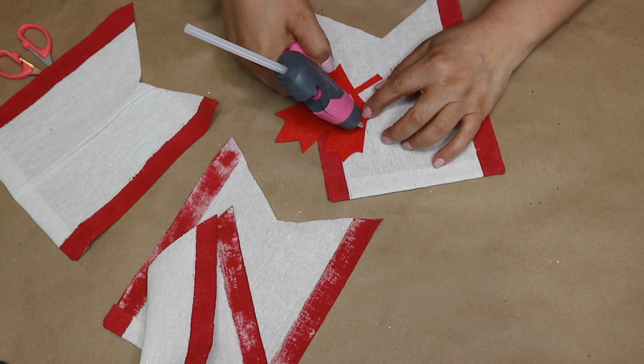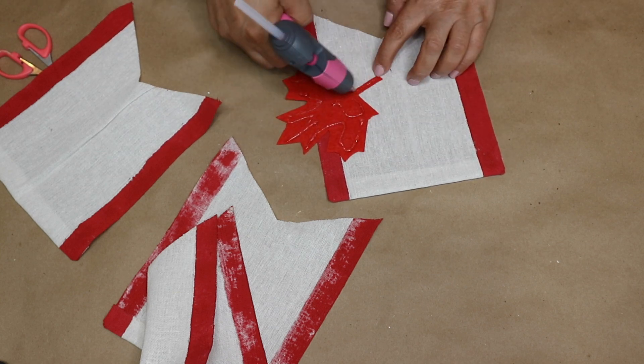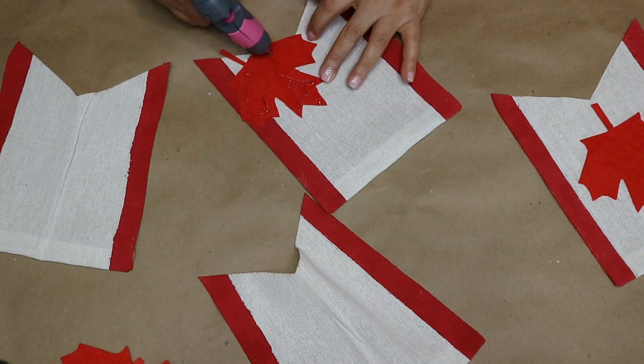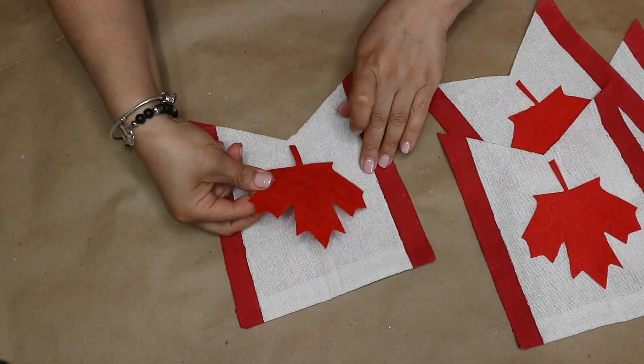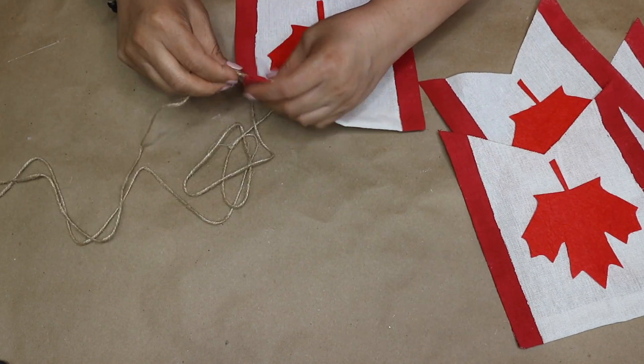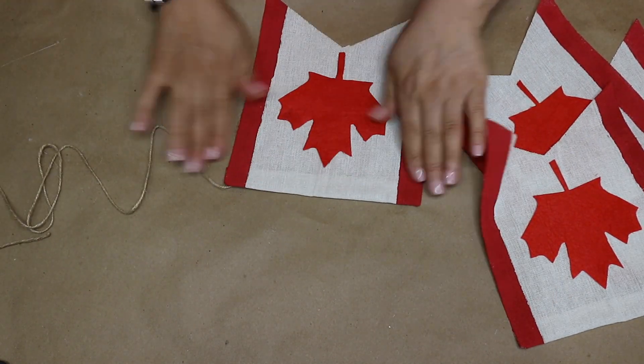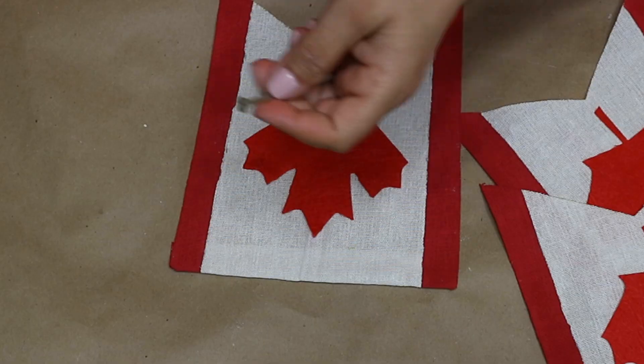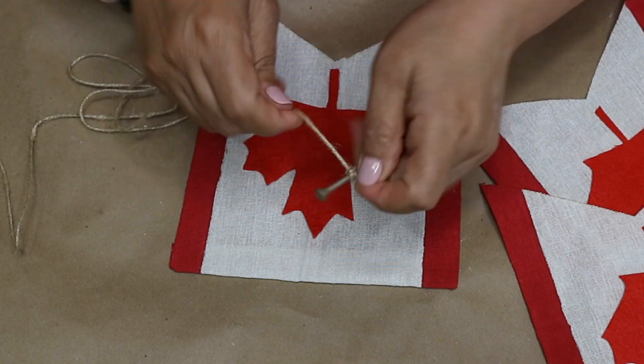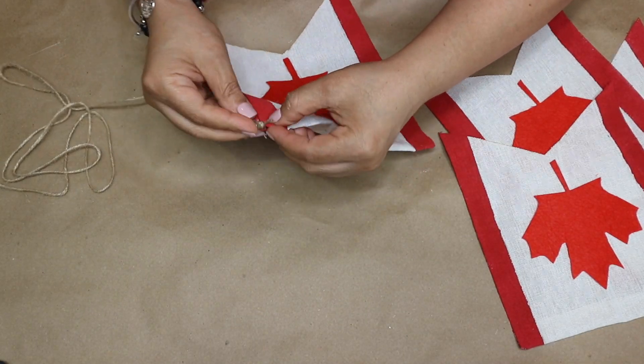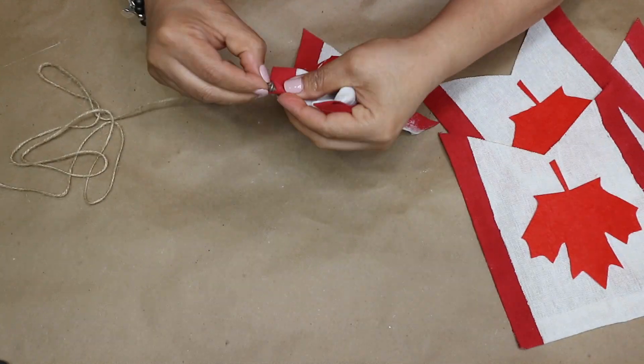So next I am going to take these maples and hot glue one on each flag. Lastly I am gonna add the jute, and here's where I struggle to thread it through the banner. So what I did was that I tied the jute on a nail and thread the nail through as you see me doing. It actually worked great and I really love how cute it turned out.